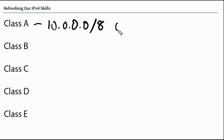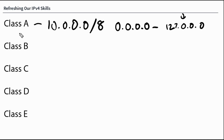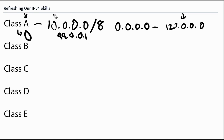Class A is really anything from 0 through 127 — we put 127 here because 127 is a reserved address. What's really going on is when we write our subnet out in binary, Class A addresses always begin with a zero. They call this the higher-order bit. So if I had a subnet that was 99.0.0.1, we know this is a Class A address because it fits in the range of zero to 127, and also because if I wrote it out in binary, the very first bit would be zero.